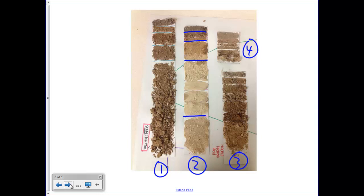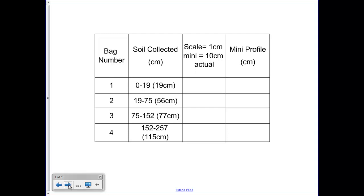First, let's do some calculations to help us build this model. Using your data table, calculate how many centimeters of soil are represented in each bag. For each bag, take the point at which you ended the collection, subtract that from the point at which you started to get a number that represents how many centimeters of soil are represented in each bag.